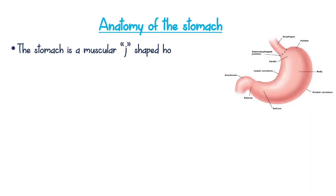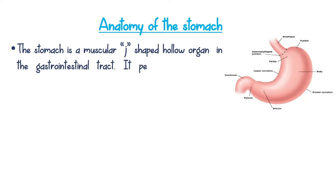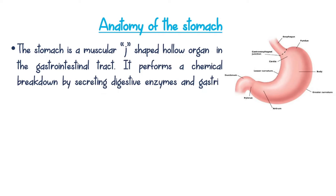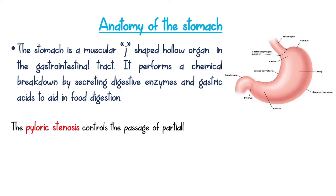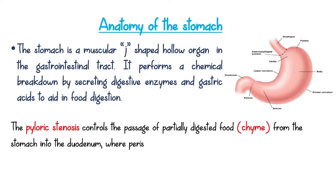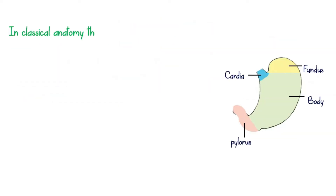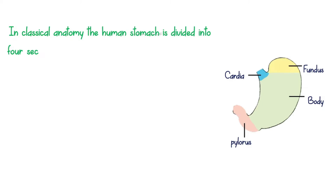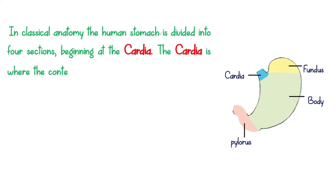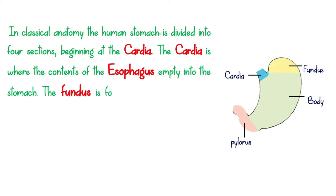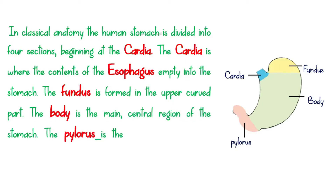The stomach is a muscular J-shaped hollow organ in the gastrointestinal tract. It performs a chemical breakdown by secreting digestive enzymes and gastric acid to aid in food digestion. The pyloric sphincter controls the passage of partially digested food from the stomach into the duodenum, where peristalsis takes over to move food through the rest of the intestines. In classical anatomy, the human stomach is divided into four sections, beginning at the cardia. The cardia is where the contents of the esophagus empty into the stomach. The fundus is formed in the upper curved part. The body is the main central region of the stomach.